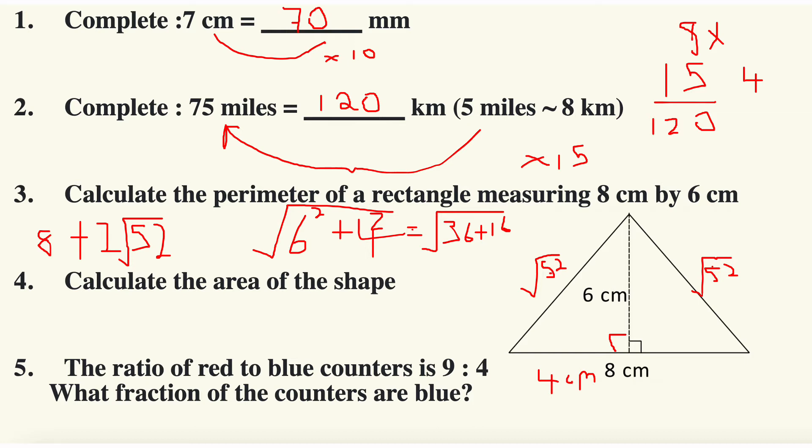Question number four: calculate the area of the shape. It's a triangle, so it's base times height divided by two, so it's eight times six divided by two. Eight times six is 48 divided by two is 24, and it's 24 centimeters squared. That's the units for area. Now for a perimeter it's going to be centimeters, so it's eight plus eight plus two root 52.